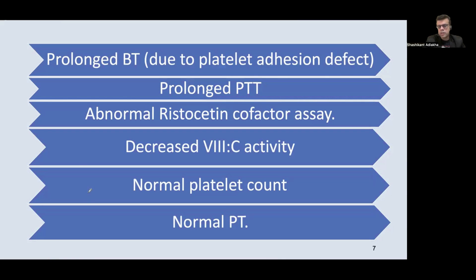In lab investigations, there is a prolonged bleeding time due to defective platelet adhesion, and prolonged aPTT (activated partial thromboplastin time) due to Factor 8 deficiency. Ristocetin, an antimicrobial, causes conformational changes in Von Willebrand factor and normally causes increased Von Willebrand factor-mediated platelet adhesion. If Von Willebrand factor is deficient, this increased adhesion will not be seen, so the ristocetin cofactor assay will be abnormal — an important indirect test for Von Willebrand factor deficiency. Decreased Factor 8 activity can also be measured. Platelet count and prothrombin time will be normal, as the extrinsic coagulation pathway is unaffected.